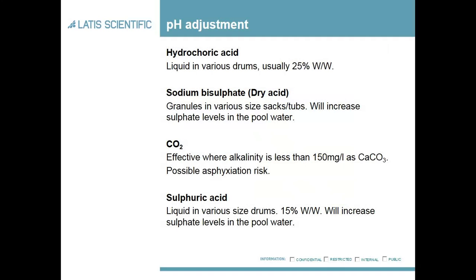To change the pH there are several different products. We've got hydrochloric acid, which comes in liquid form at around 75% weight for weight. We've got sodium bisulfate, or dry acid, which is granulated and comes in containers. This basically forms sulfuric acid when in the water. This will increase the sulfate level within the pool, which if there is insufficient backwashing, can lead to problems.